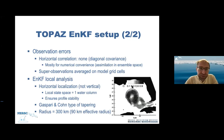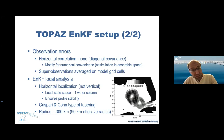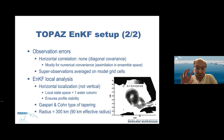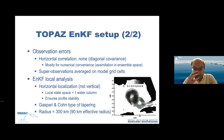For the observation error covariance, we use a diagonal matrix — no horizontal correlations — for numerical convenience. This allows us to use the Woodbury transformation to perform assimilation in ensemble space, because our ensemble has a fixed size of 100 members, which is most of the time the smallest matrix dimension compared to the number of observations and state variables. Non-diagonal terms could be included with more matrix algebra in the code.